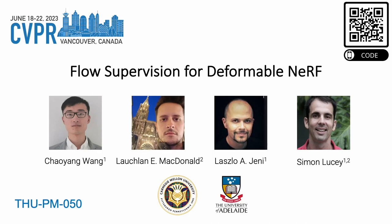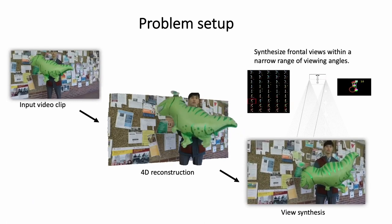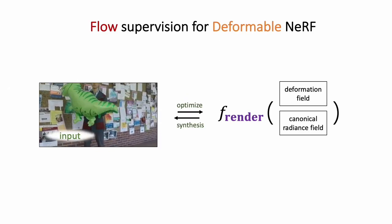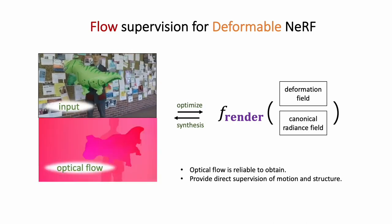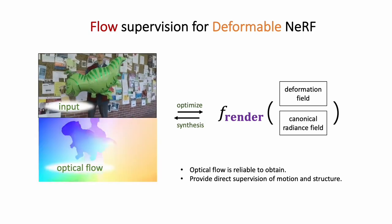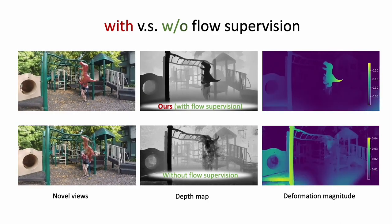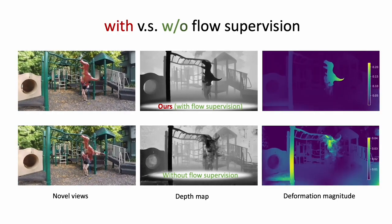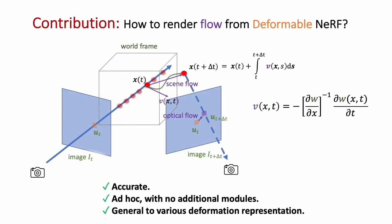We present Flow SuperVision for Deformable NeRF, a method focused on synthesizing novel view images for dynamic scenes from monocular videos. Our approach enhances the state-of-the-art deformable neural radiance field by incorporating optical flow supervision. By leveraging optical flow, which provides direct supervision for motion and structure, we achieve significant improvements in monocular novel view synthesis compared to a baseline without flow supervision. Our method produces superior depth maps, view synthesis results, and effectively separates moving objects from the static background.